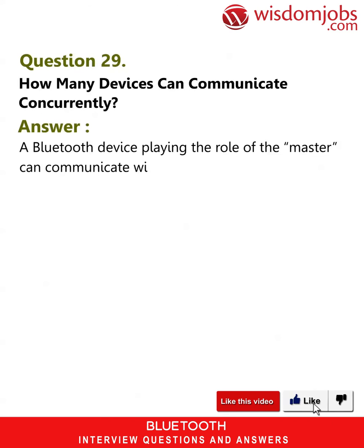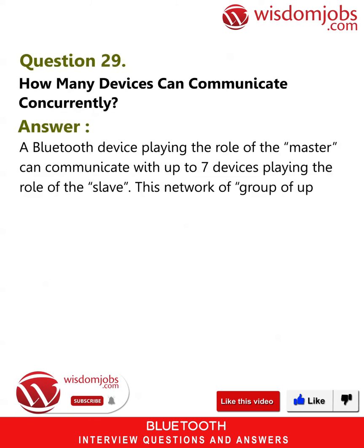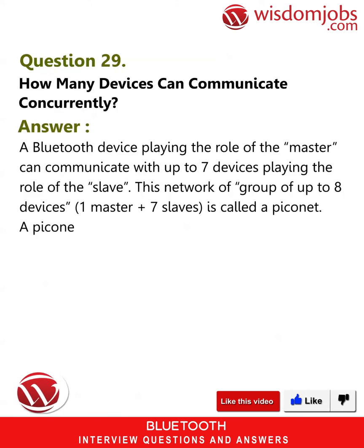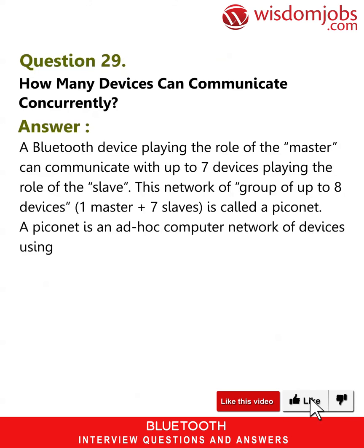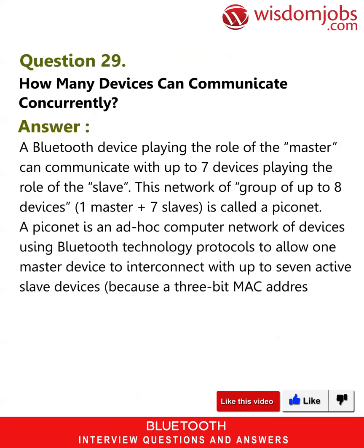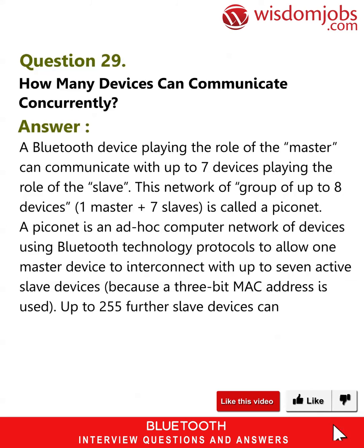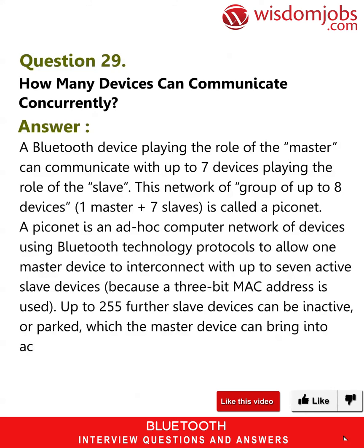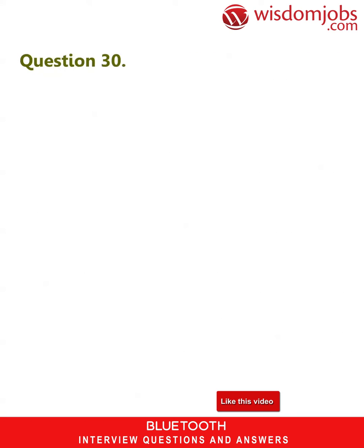Question 29: How many devices can communicate concurrently? Answer: A Bluetooth device playing the role of the master can communicate with up to seven devices playing the role of the slave. This network of up to eight devices — one master plus seven slaves — is called a piconet. A piconet is an ad hoc computer network of devices using Bluetooth technology protocols. Because a three-bit MAC address is used, up to 255 further slave devices can be inactive or parked, which the master device can bring into active status at any time.